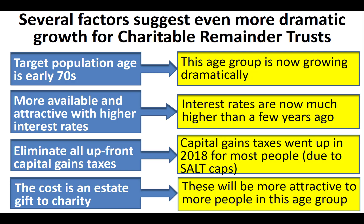All of those things put together suggest we're going to see fairly sustained growth in charitable remainder trusts. We're going to see growth in this population, growth in the proportion that wants to make a charitable estate gift. We've already seen in 2018 an increase in net combined capital gains taxes for people in states with capital gains taxes due to the SALT cap, and we've already seen an increase in interest rates which make these more available and more attractive.